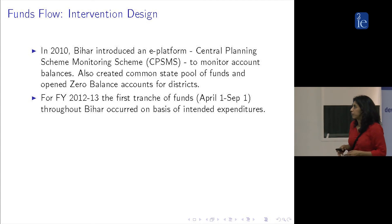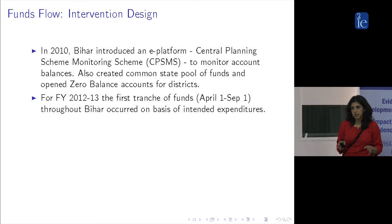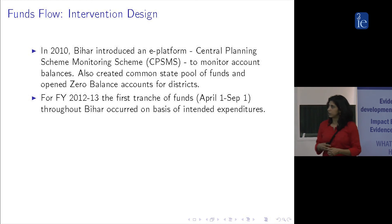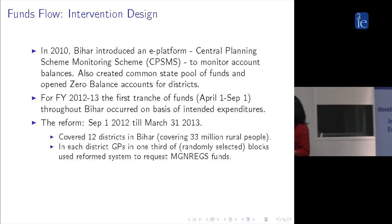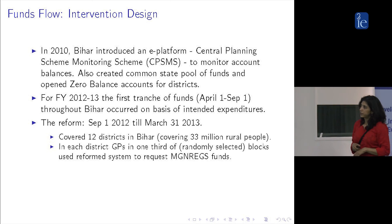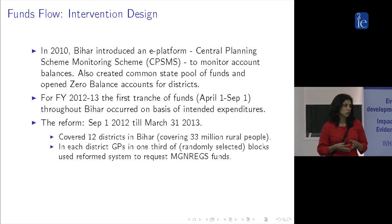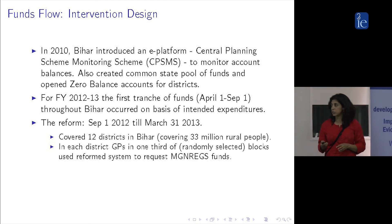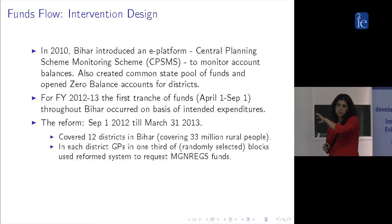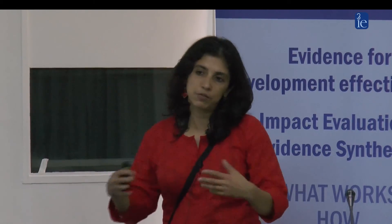Our experiment ran for part of fiscal years 2012 and 2013. The first tranche of funds between April and September happened throughout Bihar according to the status quo — everywhere based on intended expenditures. The reform started with the second tranche, running from September 2012 till the end of the fiscal year. It covered 12 districts, and the randomization occurred within each district: one third of the blocks were randomly selected, and in these blocks all GPs saw the reformed system used to request NREGA funds. Throughout both treatment and control, money was pushed into the panchayat account and then cash payments were made out of it.